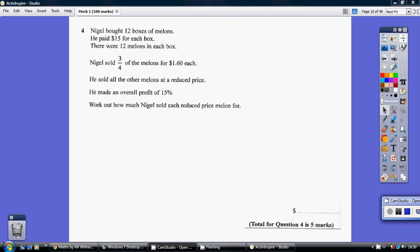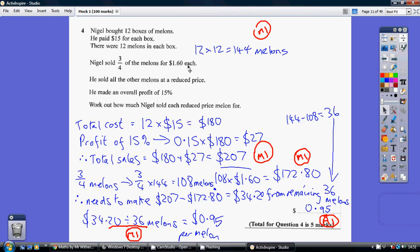Question 4. Now I thought this was really a real brain ache for so early in the paper, but there's a lot of work here which is indicated by the 5 marks. But you've just got to work your way through it, write down everything you can and just pick up as many marks as you can. So first things first, we've got 12 boxes of melons and there are 12 melons in each box, so that's 144 melons.